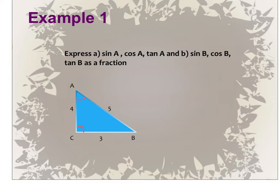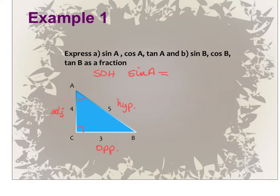Let me add in the names for each of the sides. Remember, the side across from the right angle is the hypotenuse. The side across from the angle we're talking about is the opposite, and the one right next to it is the adjacent. So now we're going to fill them in. Sine of A — using our SOH — is the side opposite over hypotenuse. For cosine of A, using CAH, we do adjacent over hypotenuse.